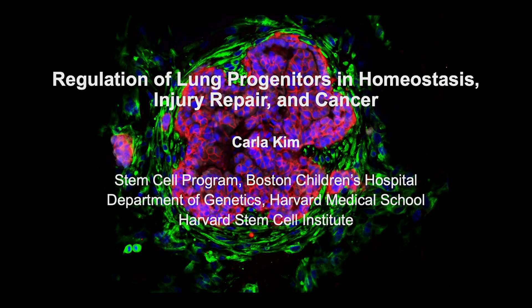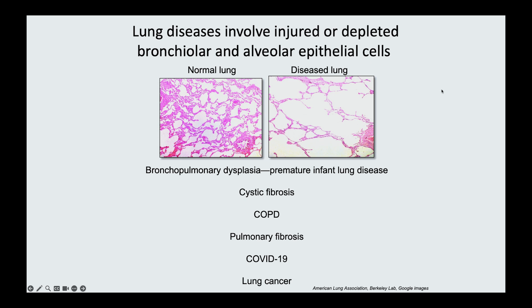Today we won't talk about cancer, but certainly it's a major interest in our lab. The way we like to focus our lab's research is to think about whether or not stem cells might be part of the initial mechanisms in the many different lung diseases listed here. One feature all these diseases have in common is either a diminution of the epithelial cells that line your airways or bronchioles, or those within the alveolar space where gas exchange occurs, or in the situation of cancer,